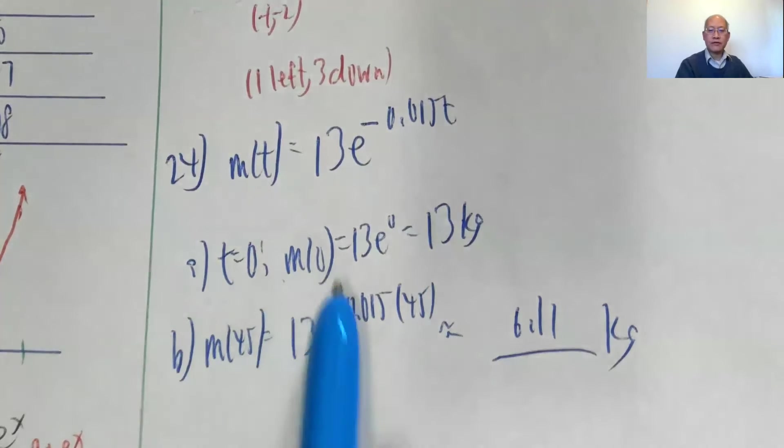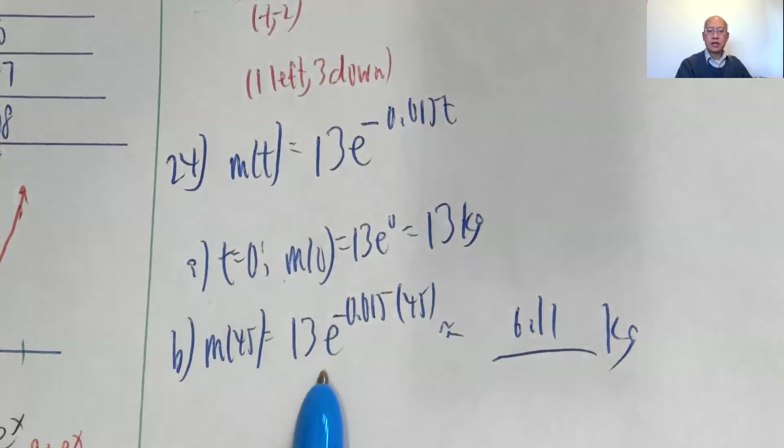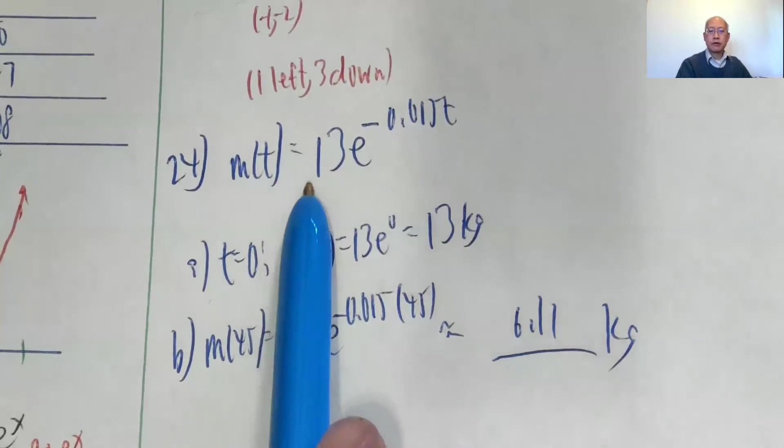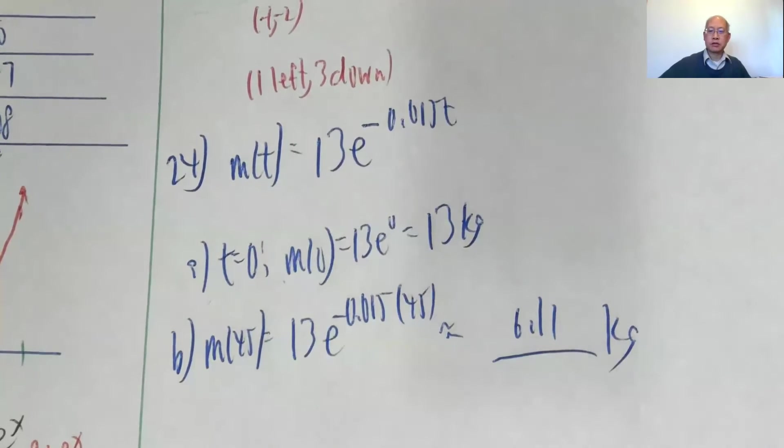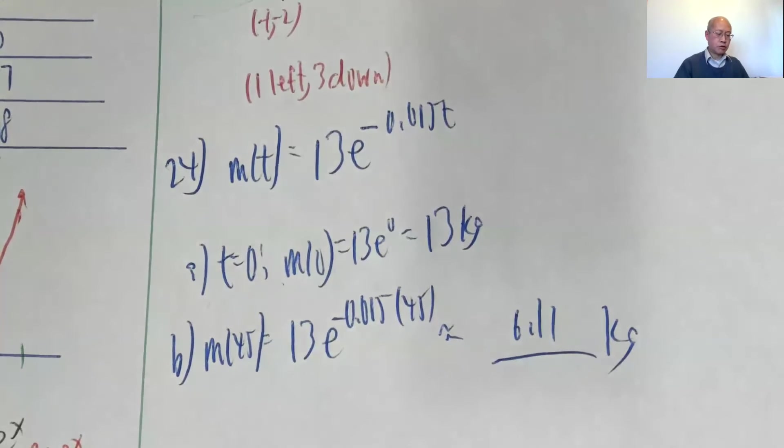Okay, then part b, they asked me to plug in 45, I simply plug in 45, 13 e to the negative 0.015 times 45 is about 6.11 kilograms, so the original of 13 kilograms has decayed down to 6.11 kilograms, let me try to punch that in for you.